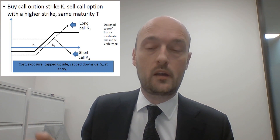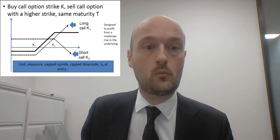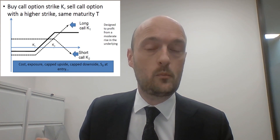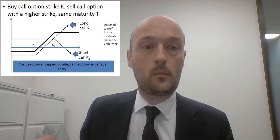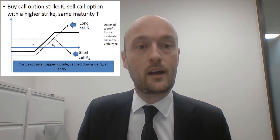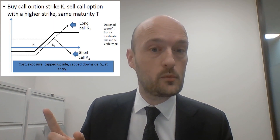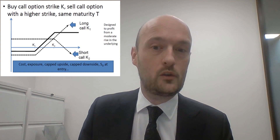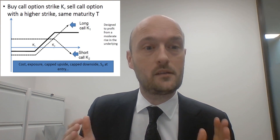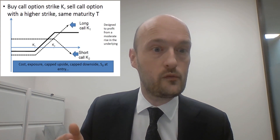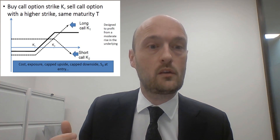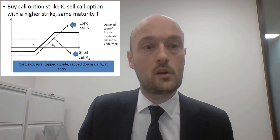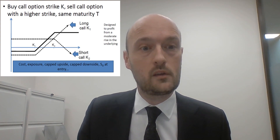Once it starts making money, we're doing well until it hits K2, and then we're not making any more money. What's the most money we can make? Once it goes above K2, we reach our maximum profit but we're not actually making more. The most we can make is the difference between those two strike prices. If the underlying is at $100 and we bought a $100 call and sold a $150 call, the most we can make is $150 minus $100, which is $50, less the premium we spent — say $10 — so the most we can make is $40.